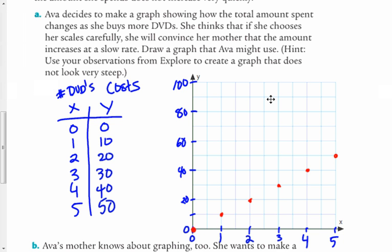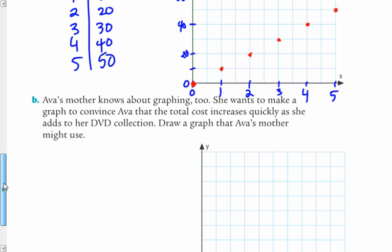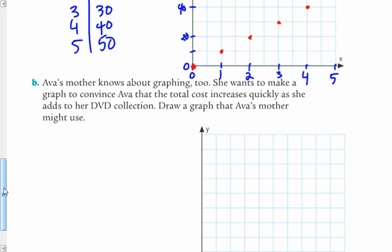So there it is. Ava's going to show her mom this graph and say, mom, it isn't so bad. Alright. Why don't you try and do this next one? And what you're going to do is try and pretend you're Ava's mother and create a graph that makes it seem like she's really spending money fast. And that's where we'll start tomorrow in class.